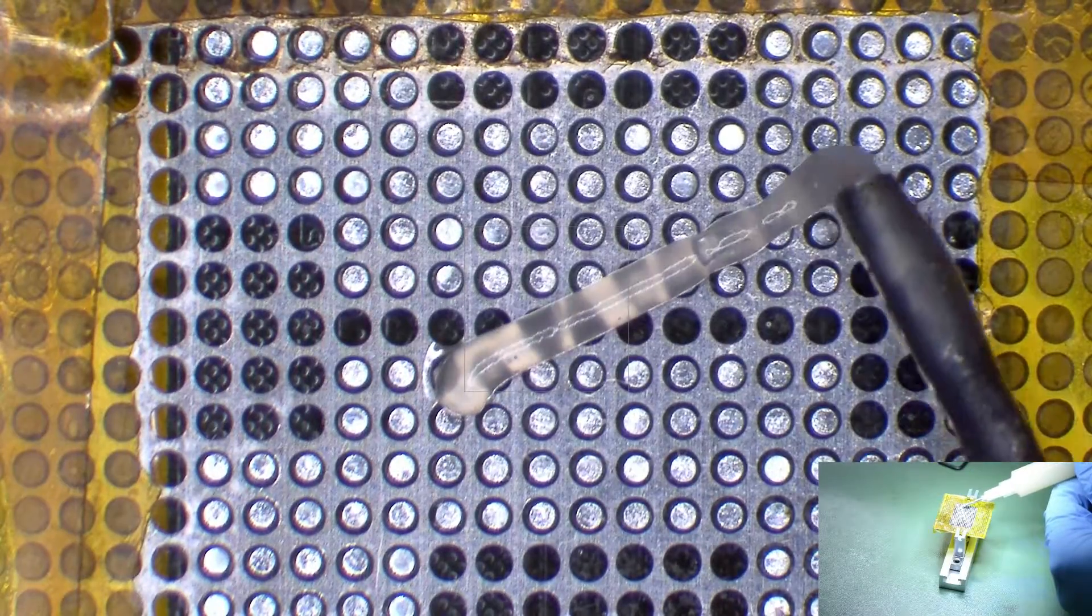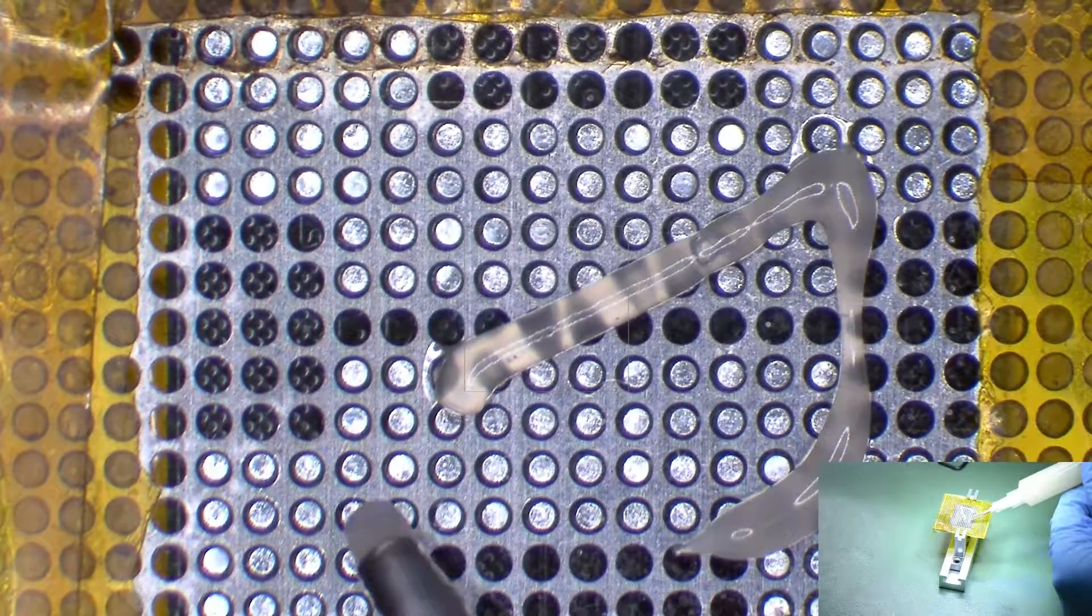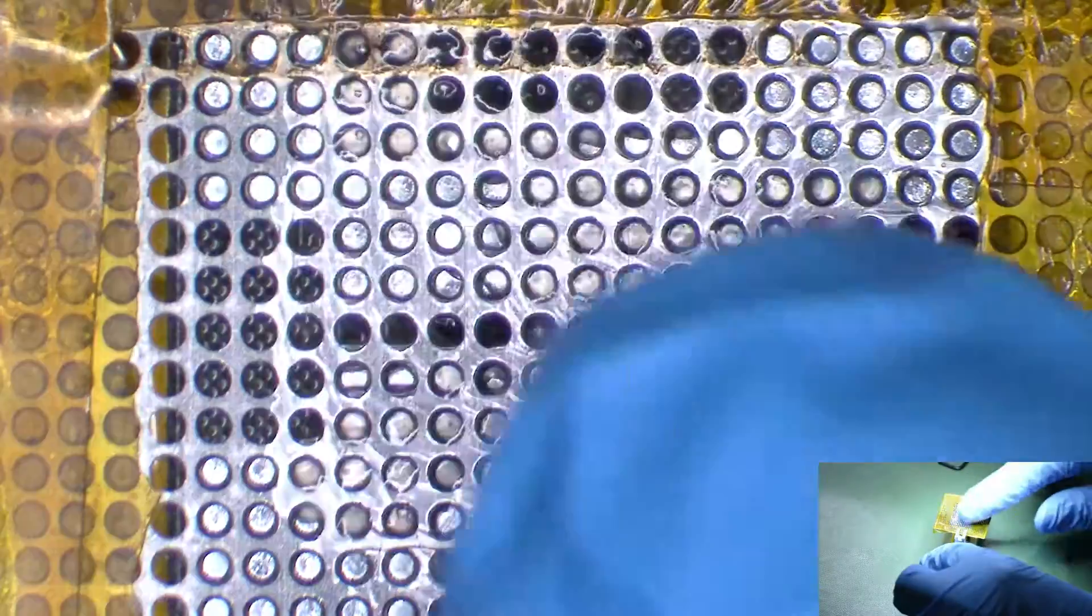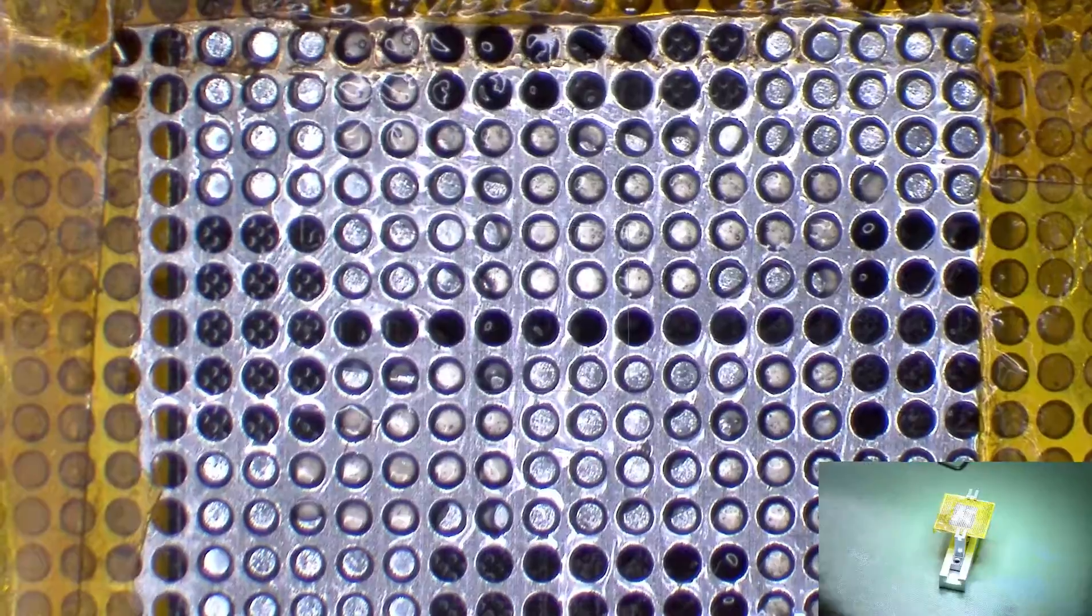Now I'm applying some Amtec Flux. It helps the solder balls melt and properly adhere to the pads on the chip. After that, I spread the flux out so it evenly coats the stencil.